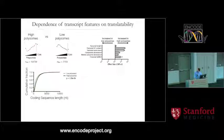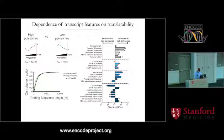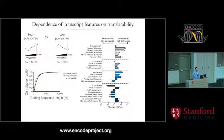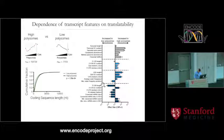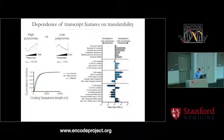You can look at a large number of features present in different transcript isoforms. The one that jumped out from HEC-293 cells was the length and content of the three-prime UTR, which strongly negatively controls translation. This is on my poster if you'd like to see it in more detail.